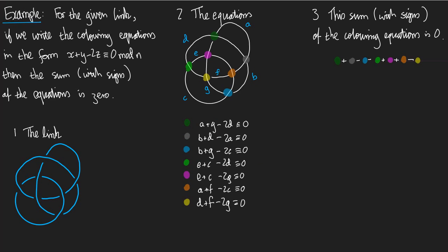Here is our example. For the given link, if we write all the colouring equations in the form x plus y minus 2z congruent to 0 — in other words, if we gather all the terms in every colouring equation on the left-hand side — then the sum with signs of the equations is zero. This is a slightly strange phrase, so let me explain what this means.